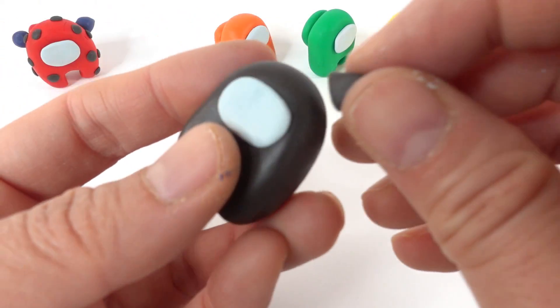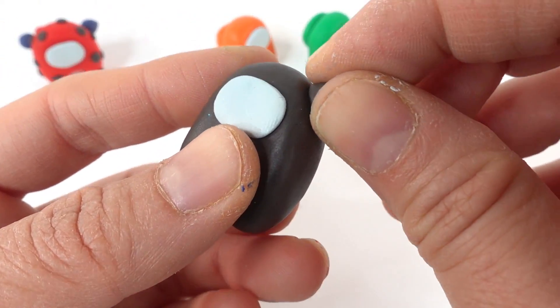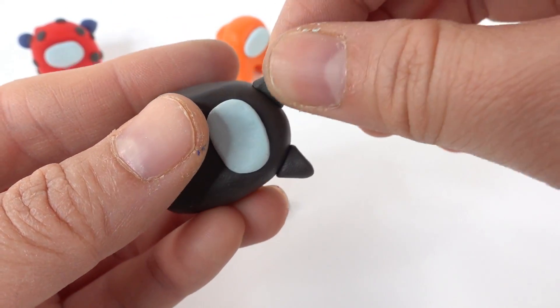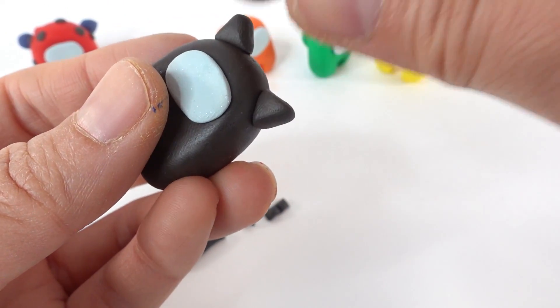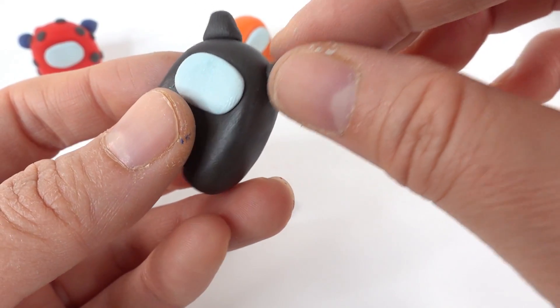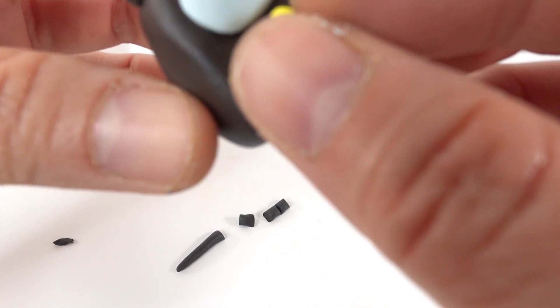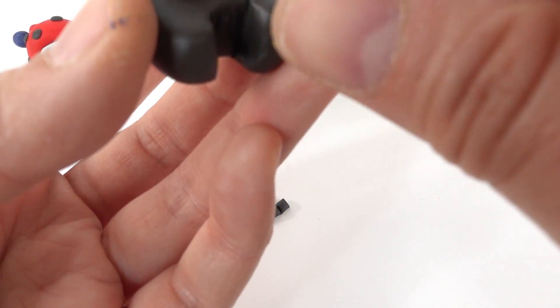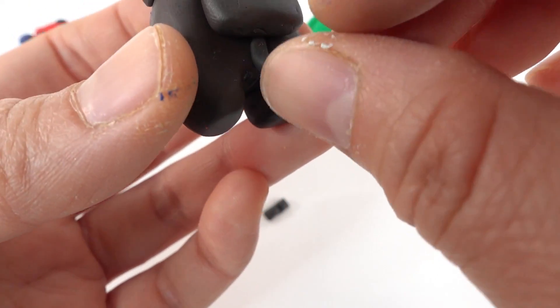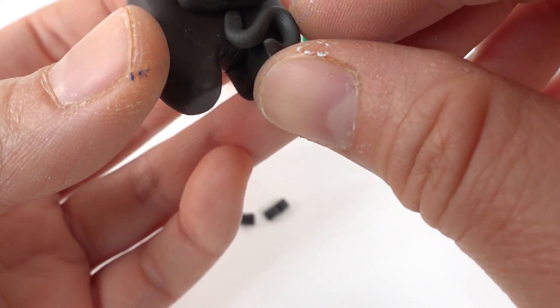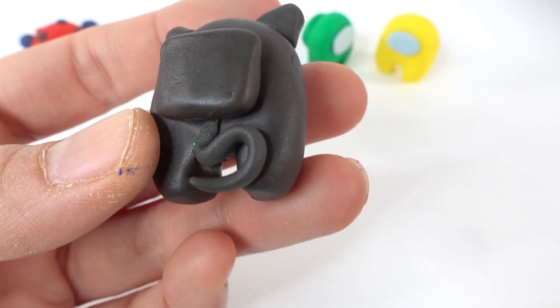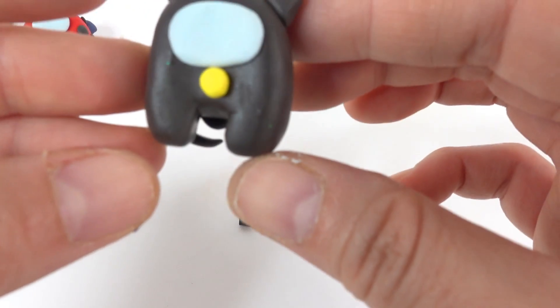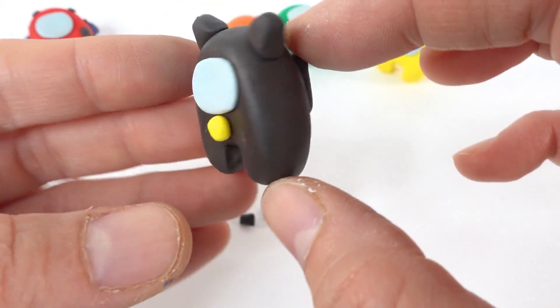For Cat Noir, we're going to add some ears. And a little yellow bell. And of course, we can't forget the tail. Oh my goodness. He's looking so cute.